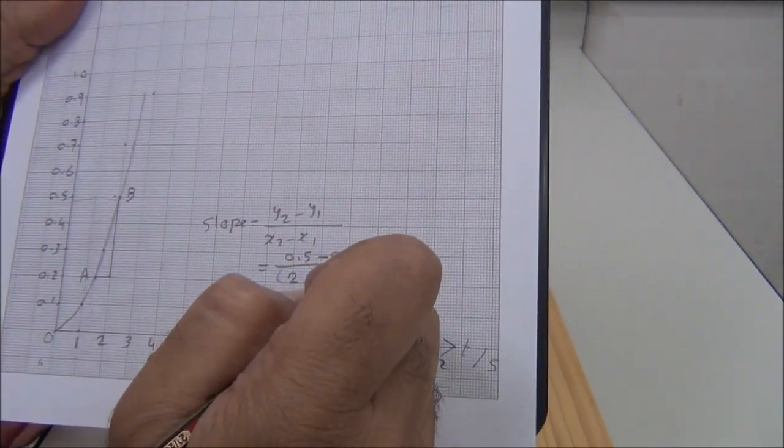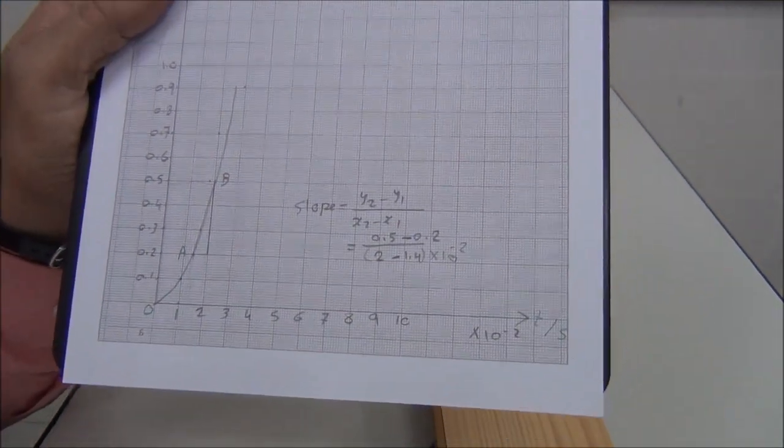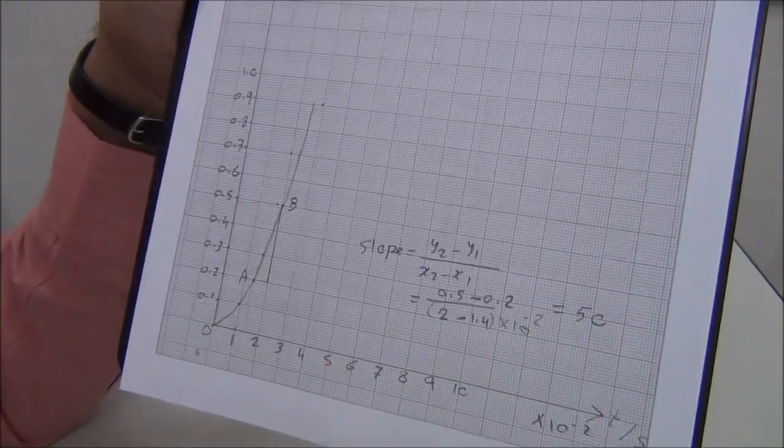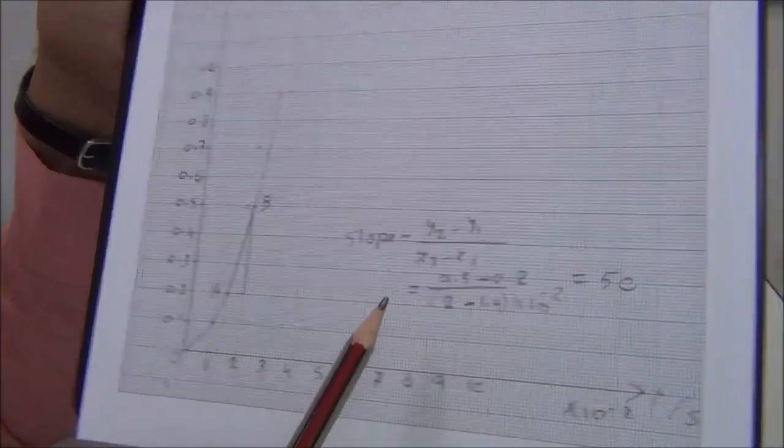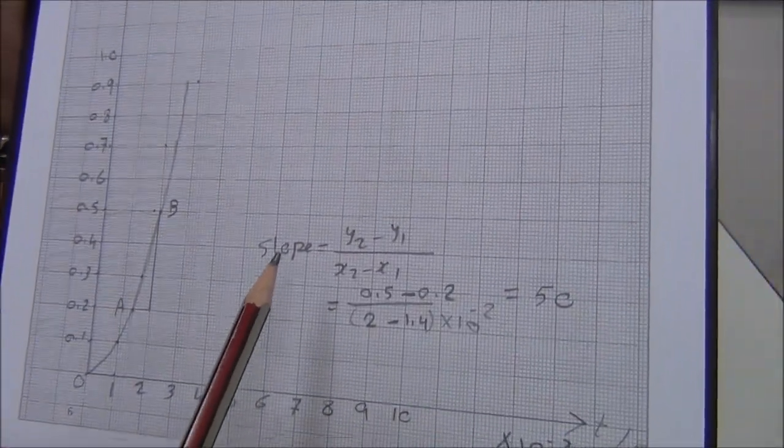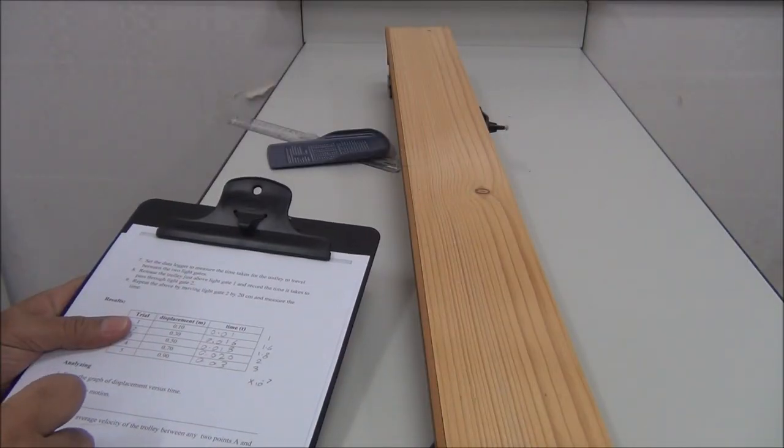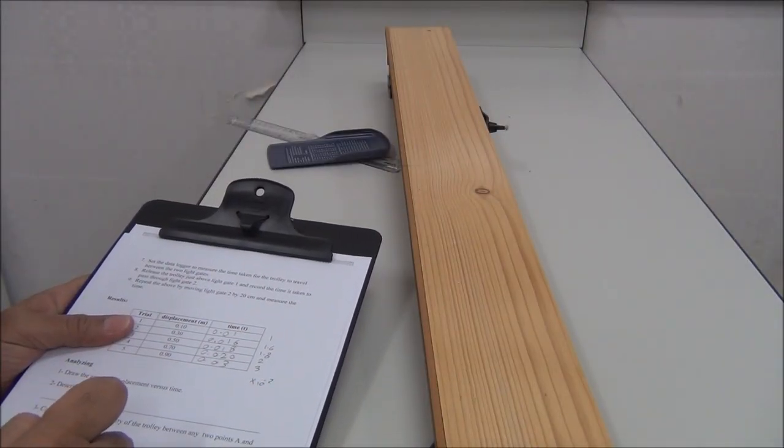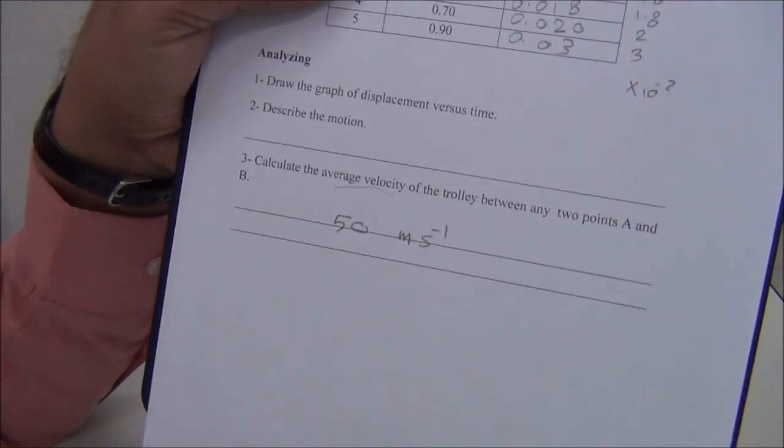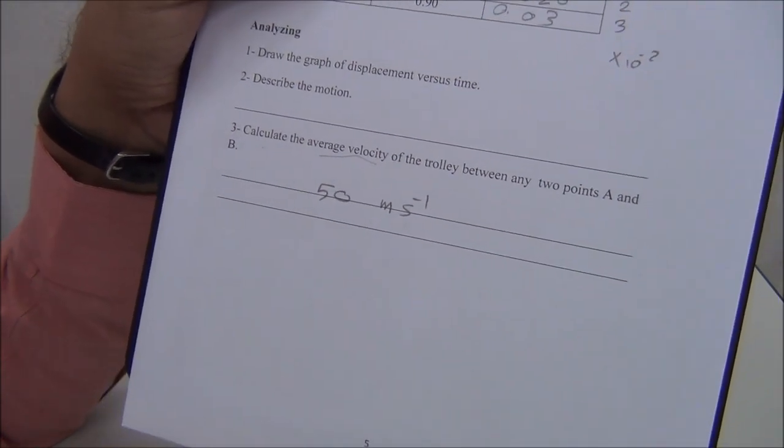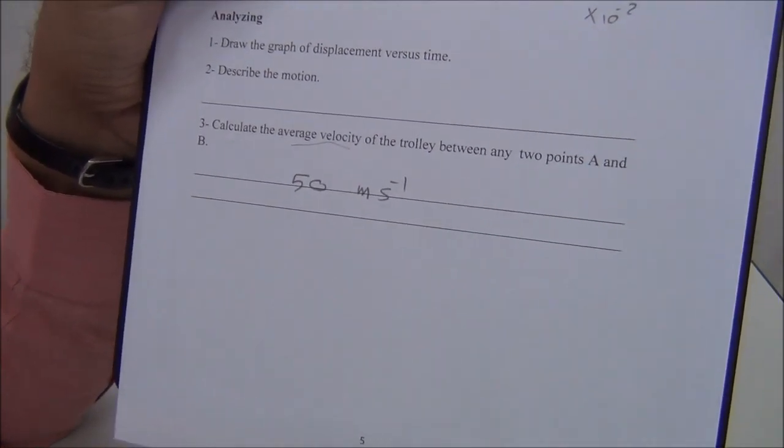Now we calculate the slope. The answer is 50, so the average velocity is 50 meters per second. I hope you understand this experiment. Thank you.